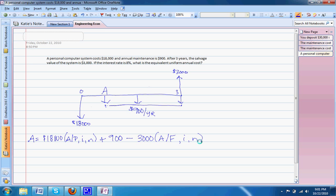We can now write our equation and fill in our interest rates. A given P at an interest rate of 8% for three years plus $900 minus 3,000 A given future, 8% for three years.